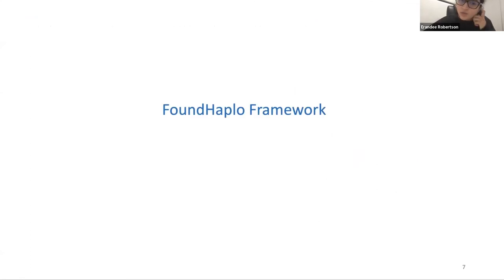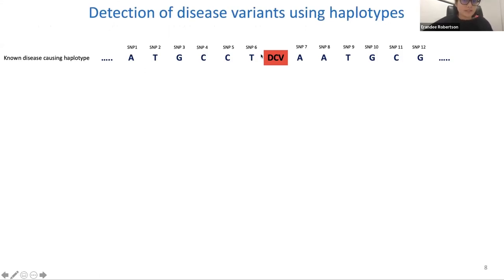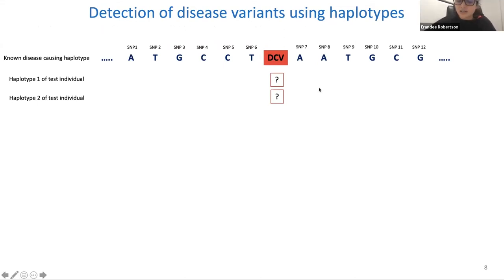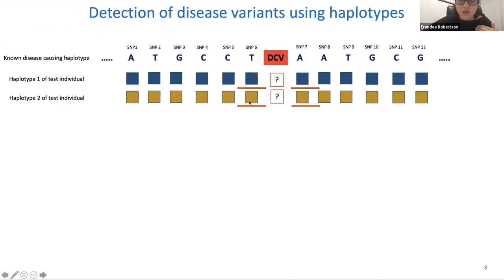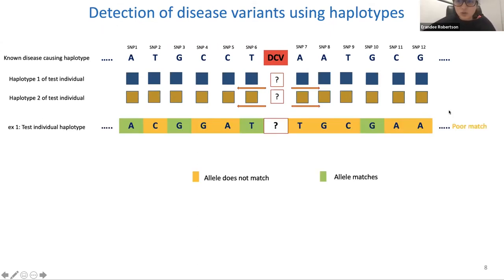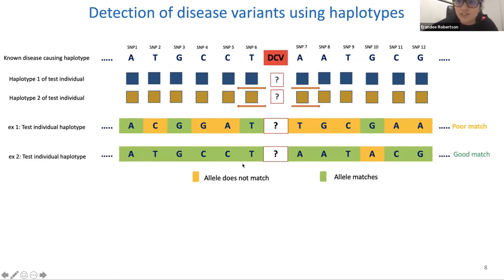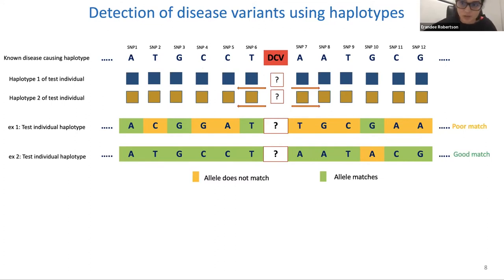Here's how predictions work in our algorithm. Given a known disease-causing haplotype containing a particular disease variant, to test if another individual has the same variant, we take one haplotype at a time and compare alleles in the neighborhood to the left and right of the disease variant locus to that of the known disease-causing haplotype. The test individual's alleles could be a poor match or a very good match. This allele sharing could happen by chance or as a result of identity by descent from a common founder.